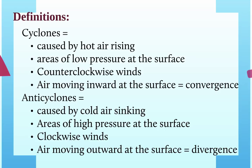Anti-cyclones are the opposite. These are caused by cold air sinking. They're areas of high pressure at the surface and they have clockwise winds. They also have air moving outward at the surface — that's divergence. Notice how they're exactly the opposite, so if you only have to memorize one, you can keep in mind that the other one is exactly the opposite.